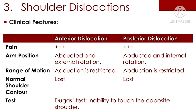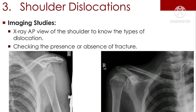Clinical features of anterior dislocation and posterior dislocation are discussed. Imaging studies: X-ray anteroposterior view of the shoulder to determine the type of dislocation and to check for the presence or absence of fracture.